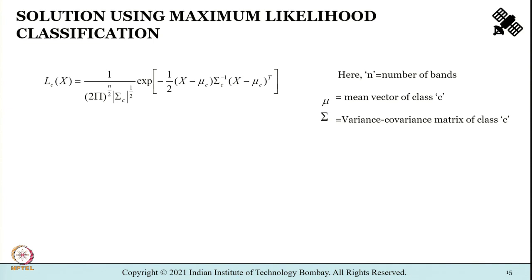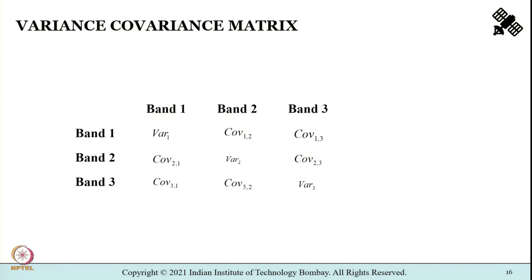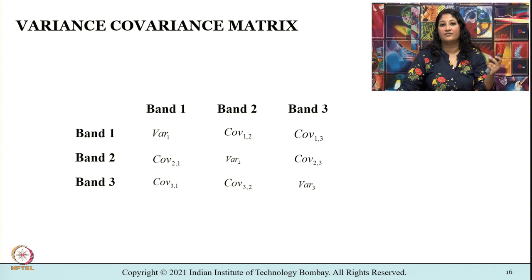Now let us understand maximum likelihood classification. We already know the relationship: how to compute it using the mean of each class, the digital numbers, the variance-covariance matrix, and n as the number of data samples. We have all the information except we need to compute the variance-covariance matrix. The mean of each class has already been computed. The variance-covariance matrix of 3 bands of a class will have a size of 3 by 3.